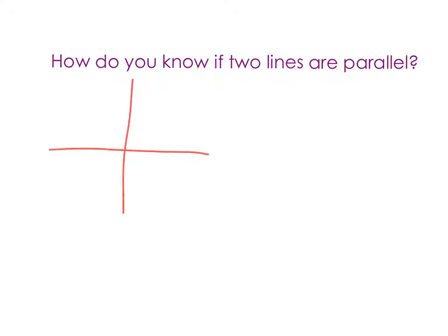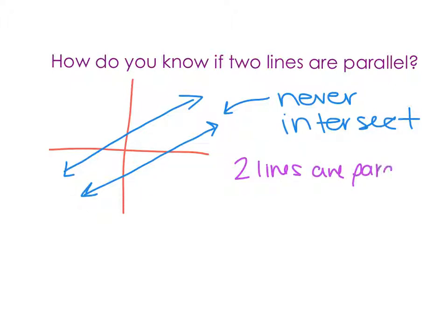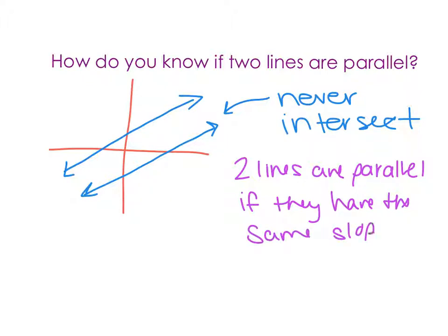So by definition, two lines are parallel if they never intersect. We have two lines here and they never cross or intersect. What's really happening, and the reason these two lines never intersect, is because they have something in common. What you need to know about parallel lines is that two lines are parallel if they have the same slope.